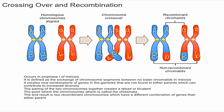In the end, as previously stated, you're going to have a different combination of genes than either parent. If you imagine the blue ones from your dad and the red ones from your mom — your dad only has capital A and capital B, and your mom only has lowercase a and lowercase b — then in the end you get one chromatid with capital A and lowercase b, which neither parent had, and another chromatid with lowercase a and capital B, which neither parent had either.